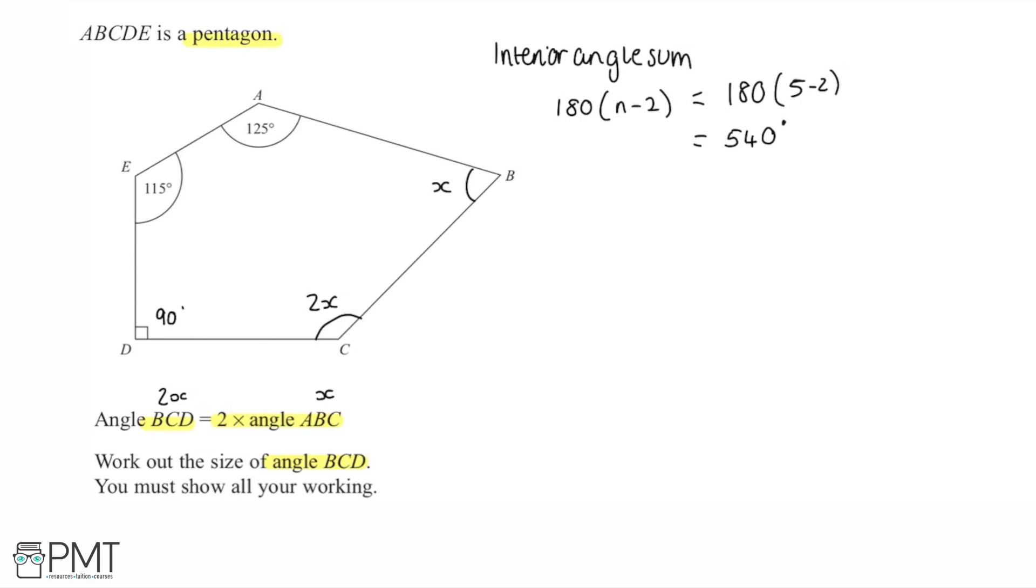And then I can simply write this up into some kind of equation. So if I sum together all of the interior angles so 115 plus 125 plus 90 plus 2x plus x that's going to give me an answer of 540. Now if I add together my x terms on this side and then subtract all of my numerical values from the left hand side and the right hand side we end up with 540 minus 115 minus 125 minus 90 and that gives us an answer of 210.